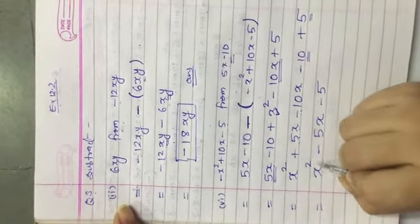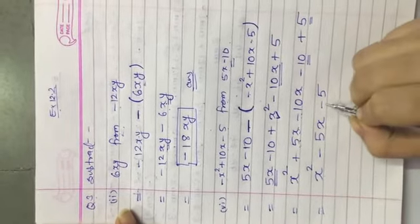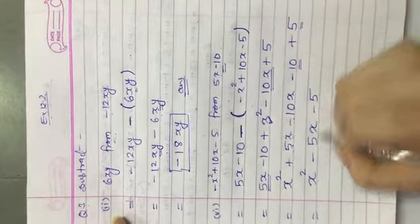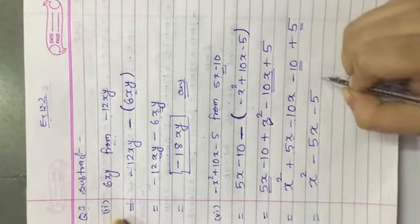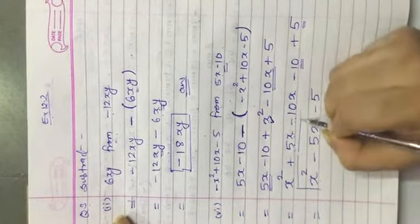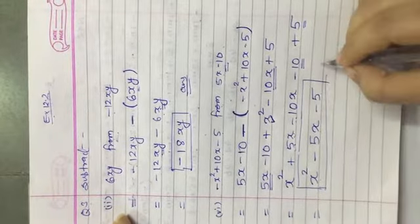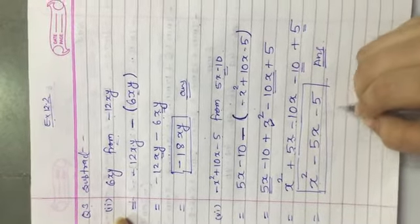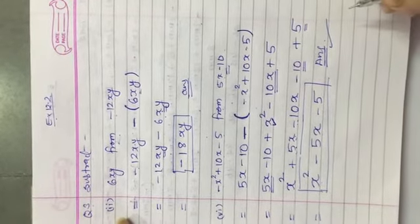Now x square minus 5x and minus 5, these all are not having like terms. There are no more like terms, all have been solved. So this will be our answer. So x square minus 5x minus 5 is the answer. Thank you.